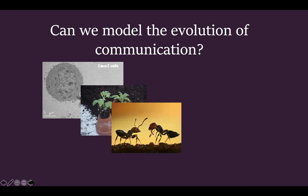Moving up to insects, ants and bees are very social and create mini-cities with pathways for finding food. Bees communicate through pheromones — a form of chemical communication. A scout bee that finds sugar comes back and performs a dance showing direction and distance to the food source. Ants similarly leave pheromone traces for other ants to follow toward food sources.